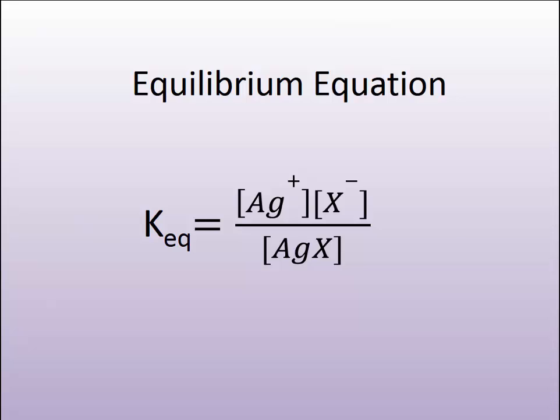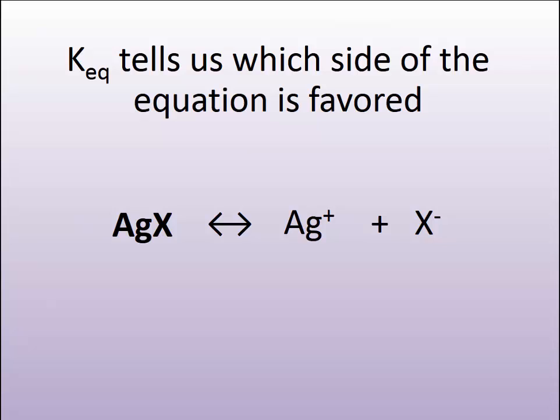In a silver halide grain, we know that these materials are very insoluble because they come crashing out of solution when we mix silver nitrate with silver halide. And so we expect the equilibrium constant to have a lot more reactant than products. And so the equilibrium constant is going to be a very small value, a low value. So the value of the equilibrium constant tells us on which side of this equilibrium process we reside.